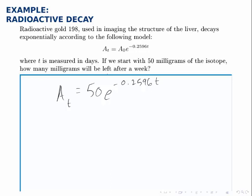Now if we're predicting how much will be left after a week, we notice that T is measured in days, so we'll need to let T equal 7.